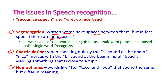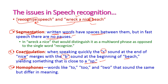For example, 'recognize recognize recognize' could sound similar to a single word 'recognize,' so the system gets confused whether it is one word or three different words. For coarticulation, when speaking quickly the 's' sound at the end of 'nice' merges with the 'b' sound at the beginning of 'beach,' so the end letter of the first word and beginning letter of the second word mix together. For homophones, words like 'two,' 'to,' and 'too' all sound the same but have different meanings.